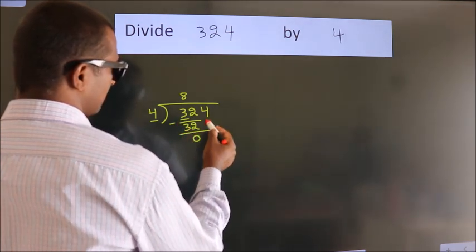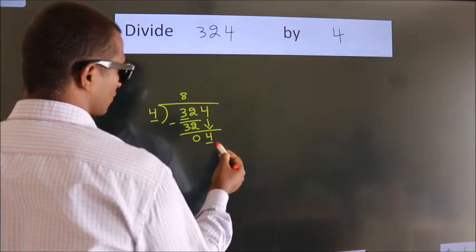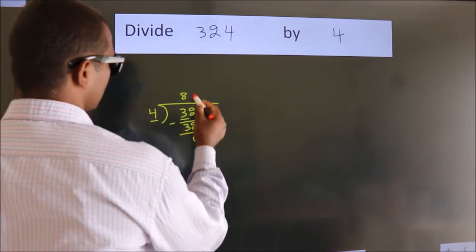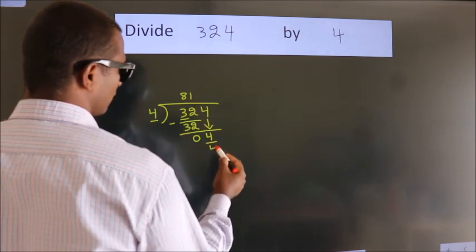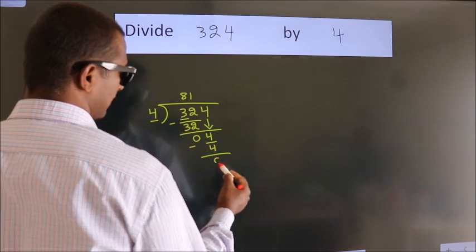After this, bring down the next number. Bring down 4. When do we get 4? In the 4 table. 4 times 1 is 4. Now we subtract. We get 0.